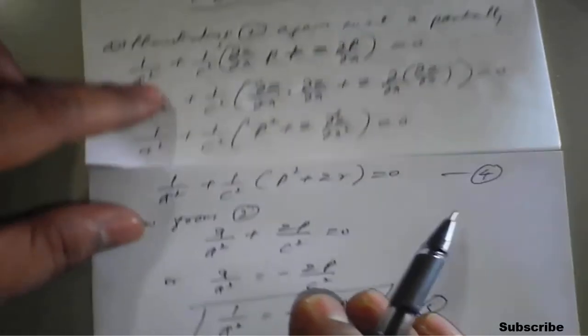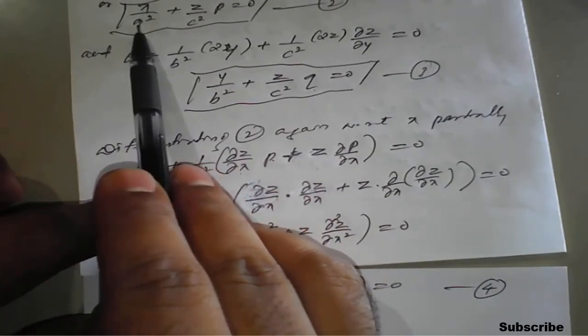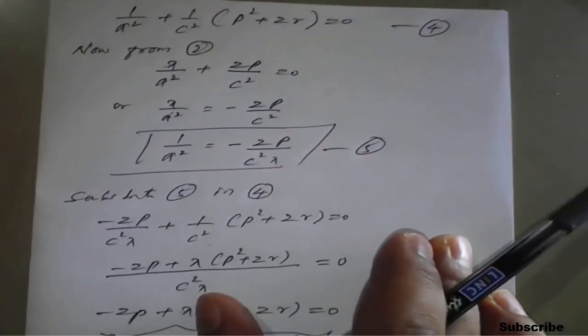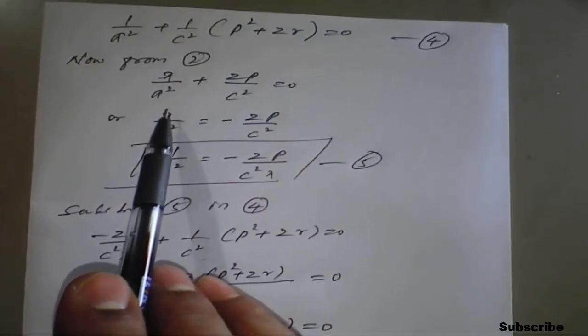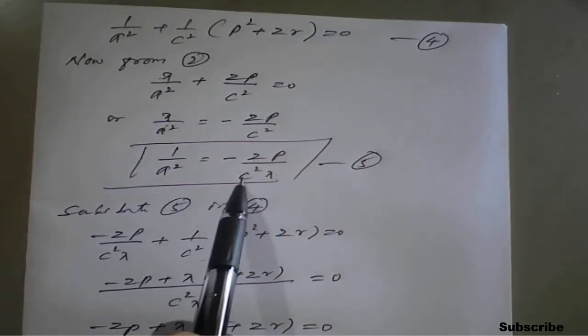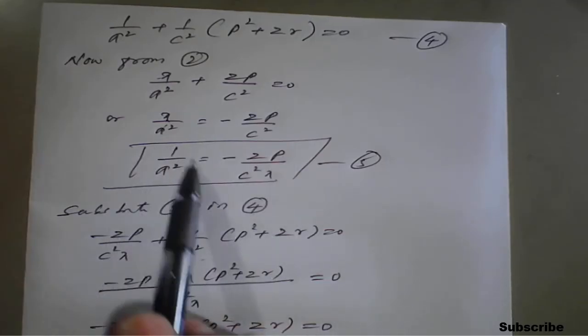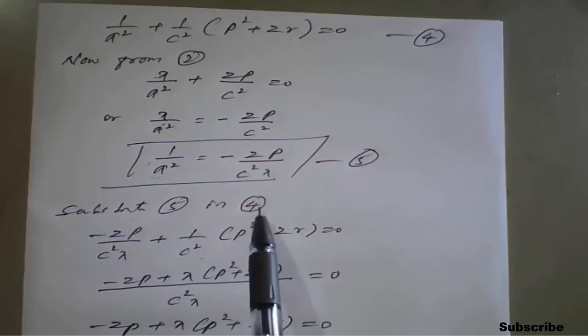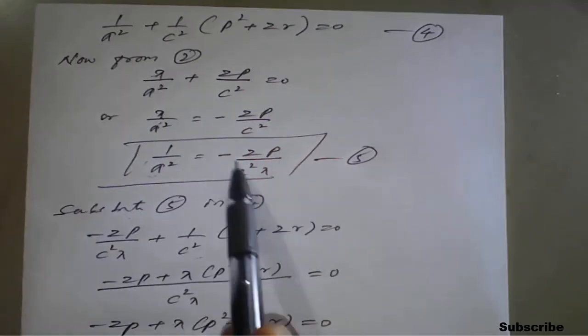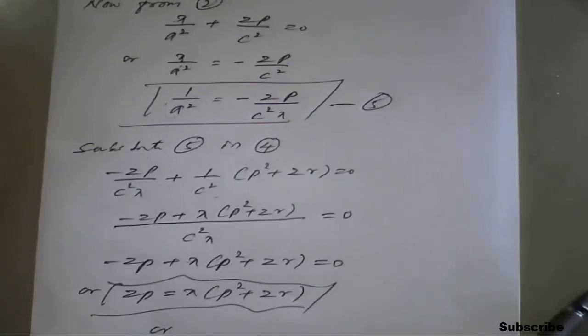From equation 2, x/a² + zp/c² = 0, we rearrange to isolate 1/a²: shifting the zp/c² term to the right-hand side gives x/a² = −zp/c², so 1/a² = −zp/(c²·x). This is equation 5. We then substitute equation 5 into equation 4, replacing 1/a² with −zp/(c²·x), and take LCM to simplify.